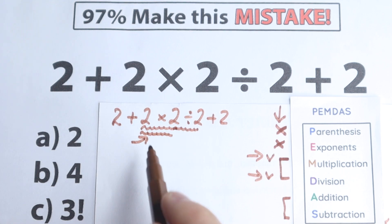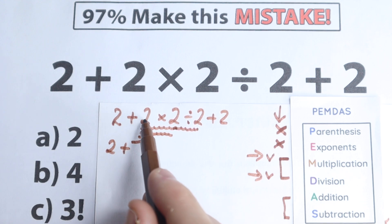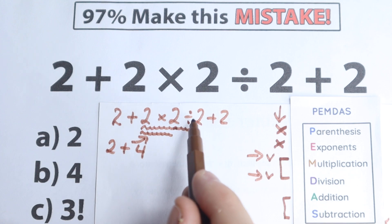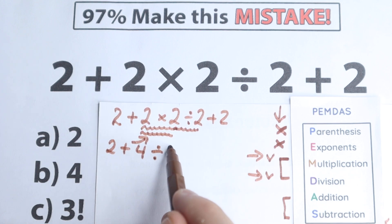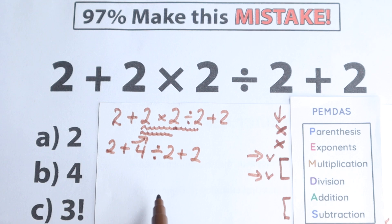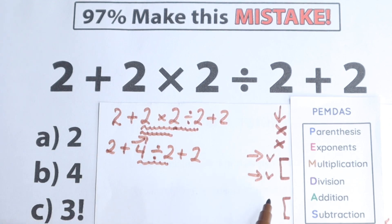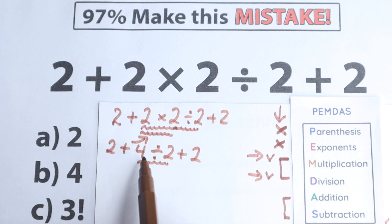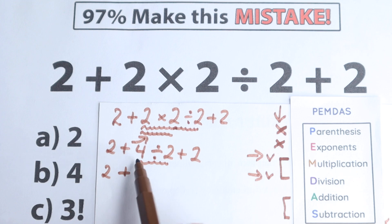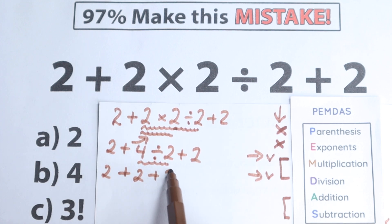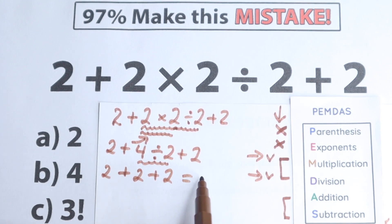So 2 times 2 is our first step. We have 2 plus 2 times 2 equals 4, so now we have 2 plus 4 divided by 2 plus 2. Now we need to divide, because addition and subtraction is the last step. We divide 4 divided by 2 equals 2, giving us 2 plus 2 plus 2, which equals 6.